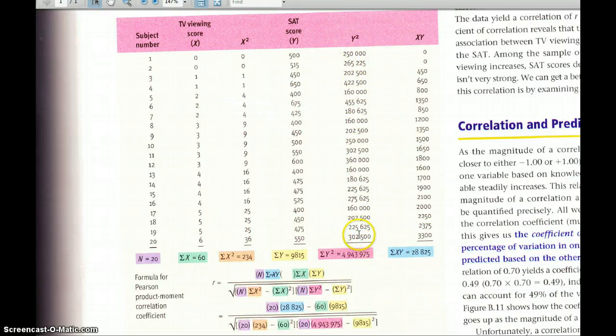And then the final column is just to multiply the x score by the y score. So if we take the first one here, 0 times 500 equals 0. 0 times 515 equals 0. 1 times 450 equals 450. So follow the same logic, work your way down the column, and then at the bottom add them all up so you get a total.